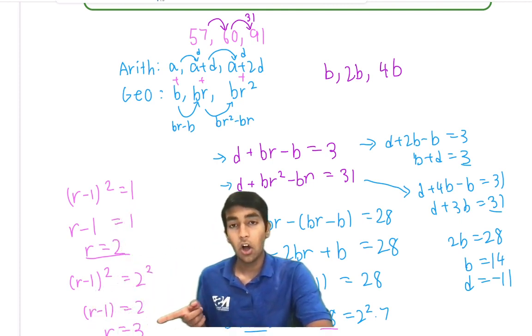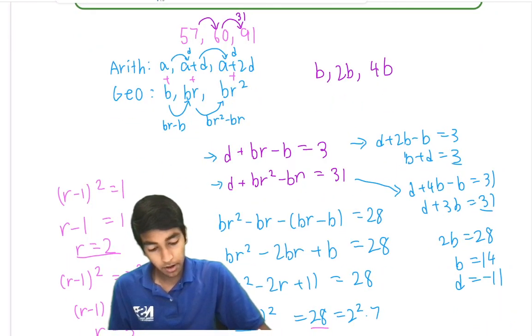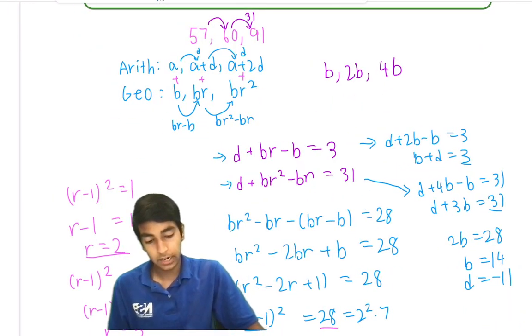Okay, that's one case. And the other case, r equals 3. But look here, common difference, starting term 14, difference negative 11.